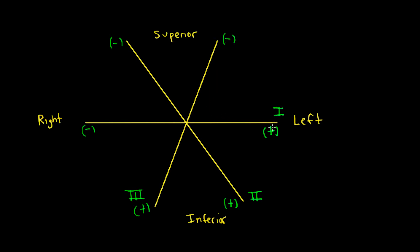Now let's add the unipolar leads — the augmented voltage leads. These are called unipolar because they're not subtracting one electrode from another; instead, they record the electrical voltage at one electrode relative to a zero potential. That zero potential is obtained in the electrocardiograph machine by joining the three extremity leads to a central terminal, where the sum of the right arm, left arm, and left leg electrodes equals zero, giving the central terminal a zero voltage.